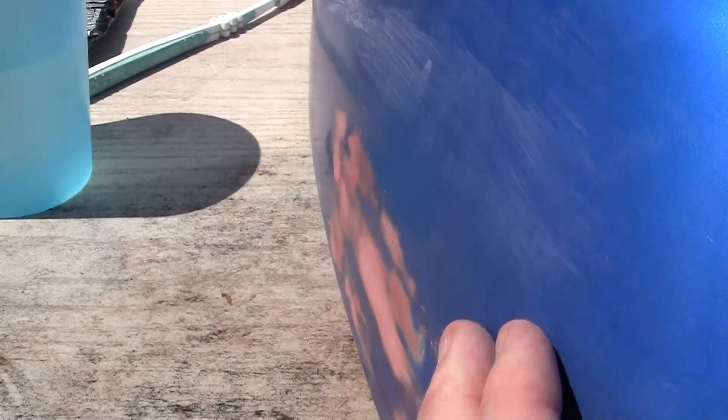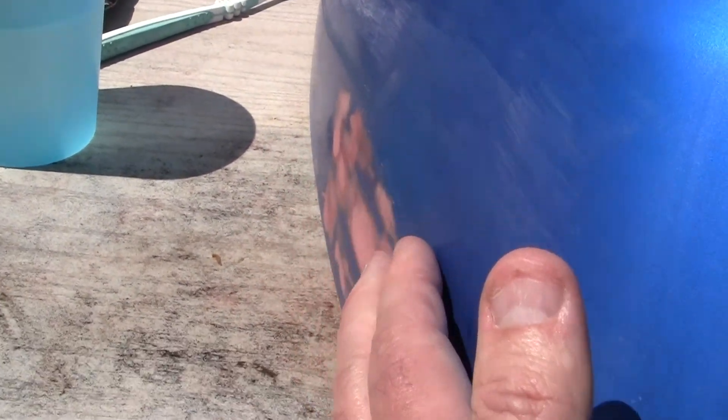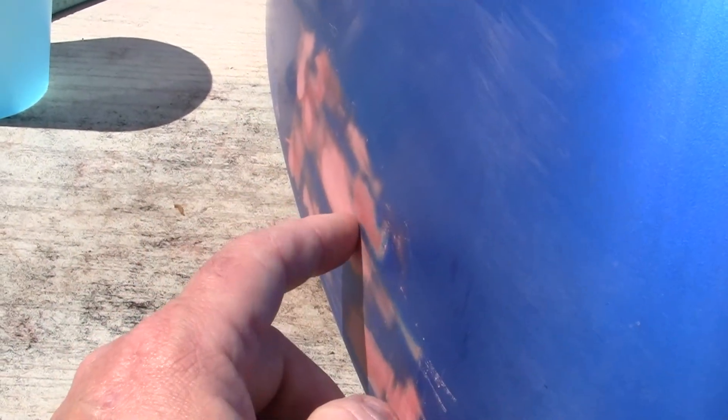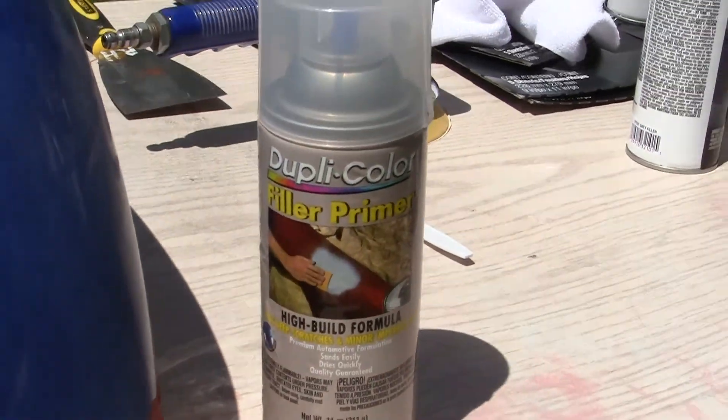And see if you can feel anything. Any kind of disruption, any kind of bump, depression, anything. And when you're close to where you can't feel anything or you're happy with that, then you know the panel's ready to paint or going on to the next phase of using primer filler.